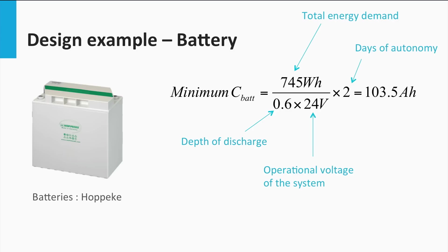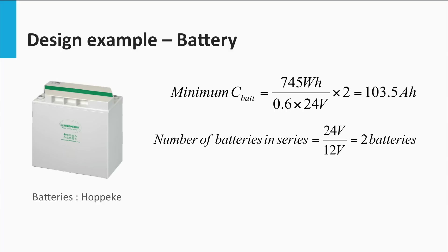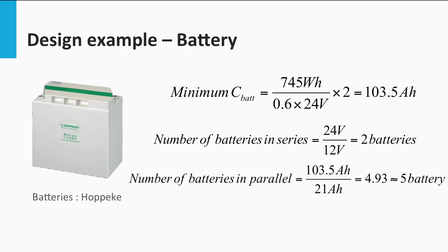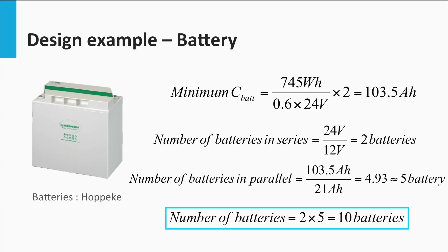This gives a minimum battery capacity of 103.5 Ah. An operational voltage of 24 V requires 2 batteries of 12 V each in series, while a battery capacity of 103.5 Ah requires 5 batteries in parallel. Therefore a total of 10 batteries are required to create the battery bank for the PV system.